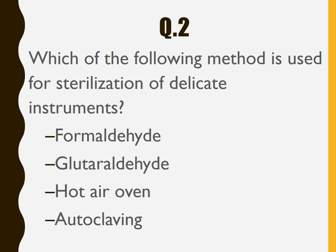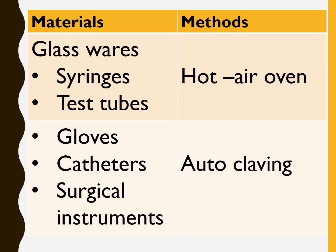Question number 2: Which of the following method is used for sterilization of delicate instruments? The options are formaldehyde, glutaraldehyde, hot air oven, and autoclaving. The answer is Option B — glutaraldehyde. Let us discuss the sterilization materials and the methods.